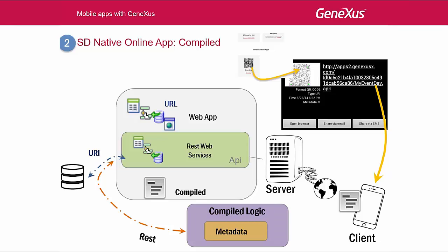To compile the Android application, we only have to set the startup object, for example, the EventDay dashboard, in the environment properties, like the C-sharp environment. In this case, pressing F5 will no longer generate the web application. Therefore, the browser will not be opened, and only this object — the dashboard — and all the objects that depend on it, will be compiled instead. This compiled file will be saved in the server, and from there we will be able to download it to install the app on the device. Or, if we're using the emulator, it will be opened directly in the emulator.